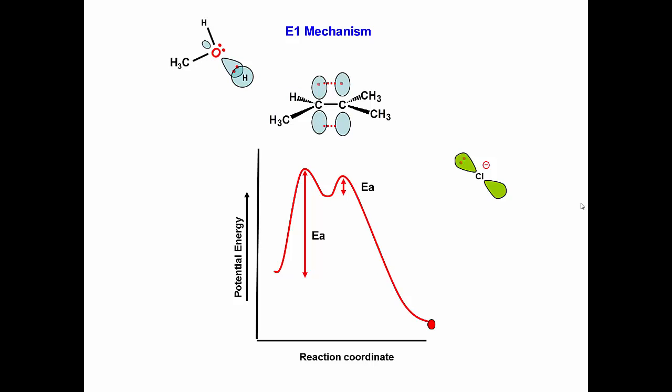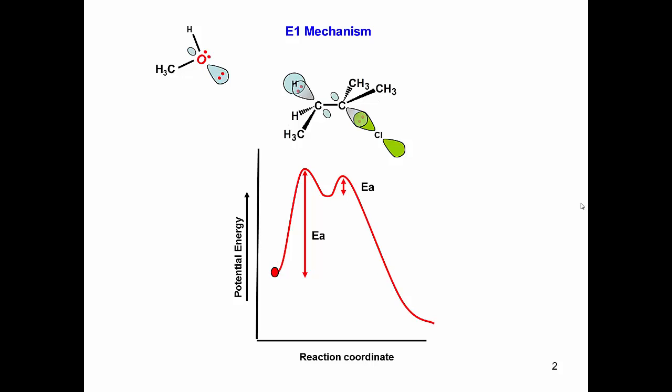The first step involves bond breaking and is an endothermic process that absorbs energy from the system. This is a slow process because the intermediate formed is less stable than the starting material and thus has a higher potential energy.